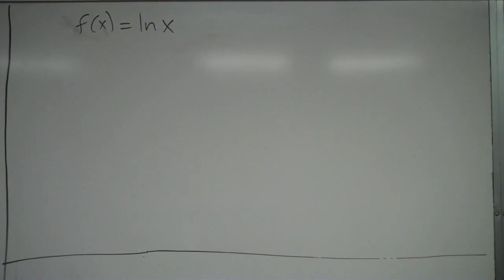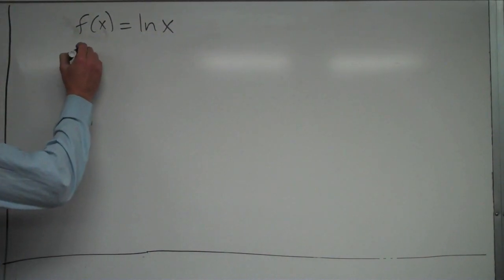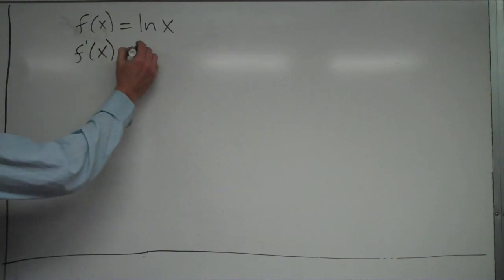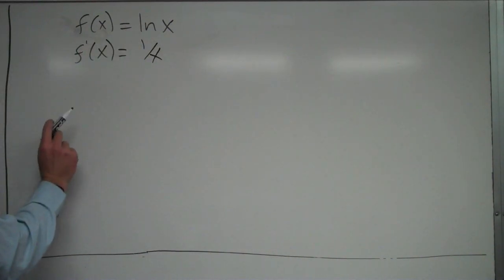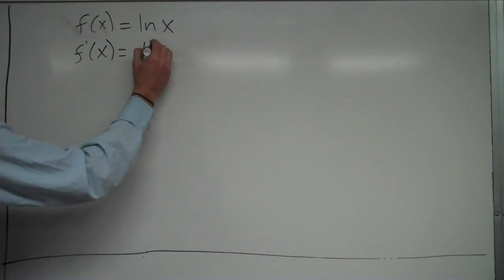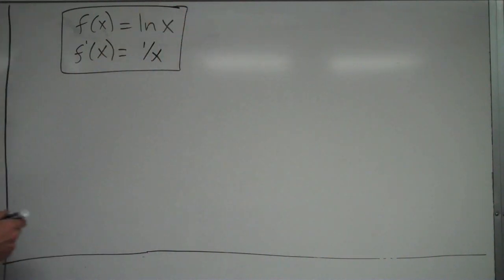We're talking about the function natural log of x. Let's take a look at what the derivative of natural log x is. If f of x is equal to ln x, the derivative is 1 over x. So if f of x is natural log x, the derivative is 1 over x. That one you've got to keep in your memory bank — you have to memorize that.